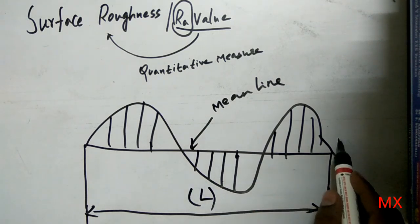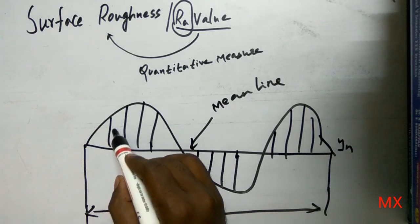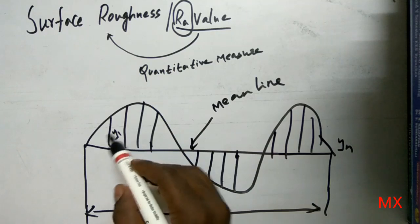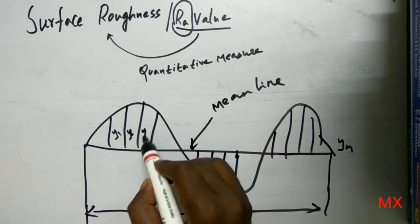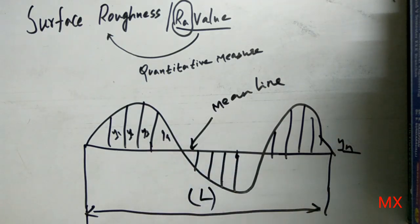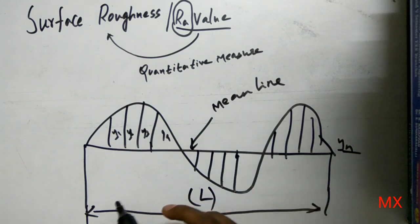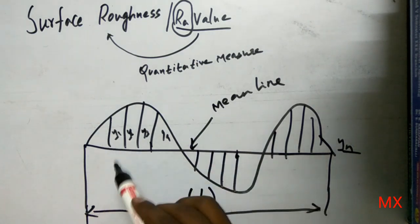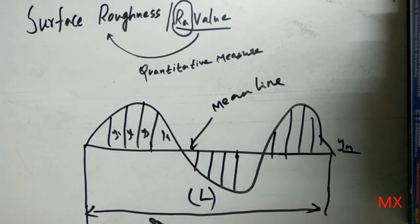This goes up to Yn. The deviations are termed Y1, Y2, Y3, Y4, and so on up to Yn. This is the outline for surface roughness. When you consider any surface, these are the deviations in which a sampling length is made to decide for measuring the Ra value. First, the sampling length.